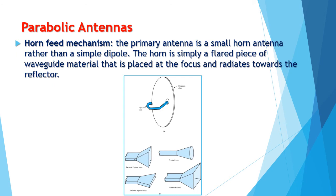Another type is the horn feed mechanism. The primary antenna is a small horn-type antenna rather than a simple dipole. The horn is a flared piece of waveguide material placed at the focus that radiates towards the reflector. Instead of a regular dipole, it is switched with a horn-type antenna, which functions the same way — sending electromagnetic waves towards the bigger parabolic dish. The smaller reflector is no longer needed since all of the electromagnetic energy is sent towards the larger parabolic dish.